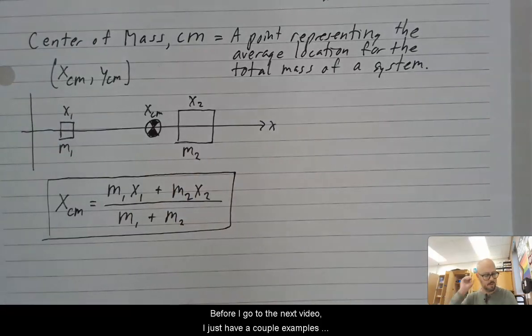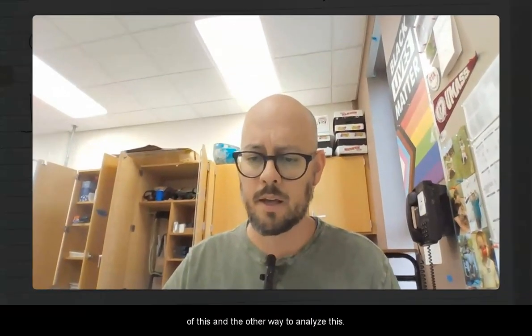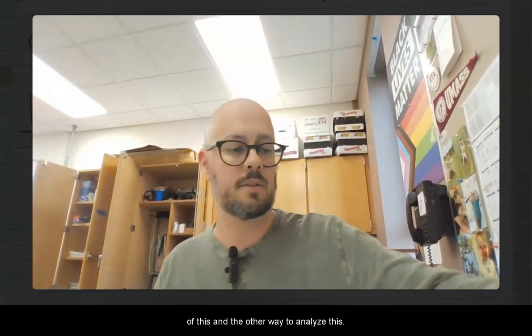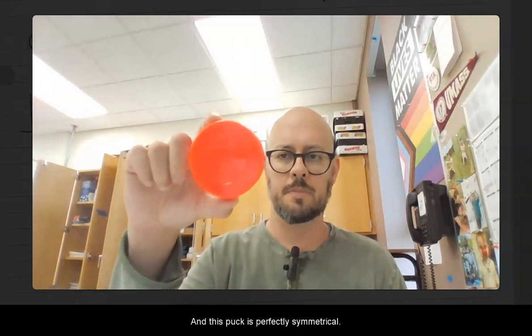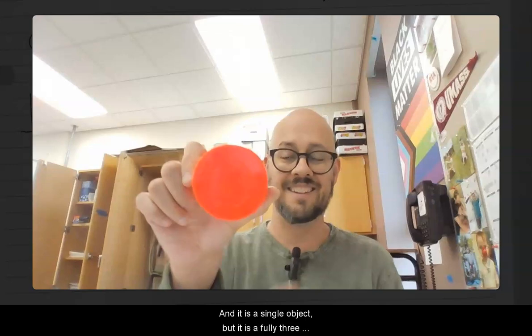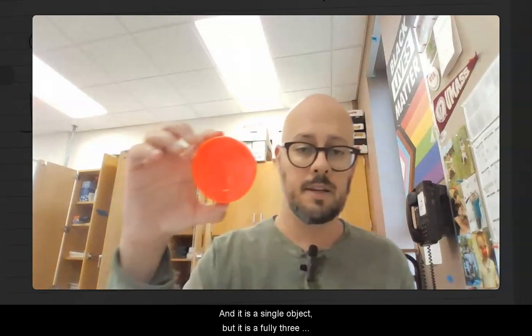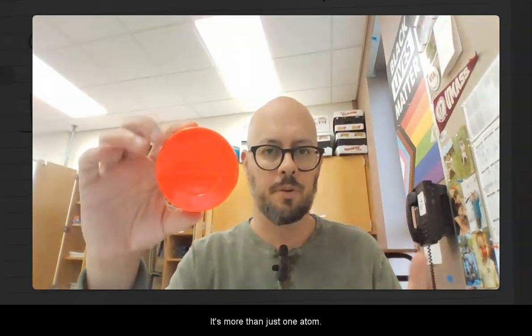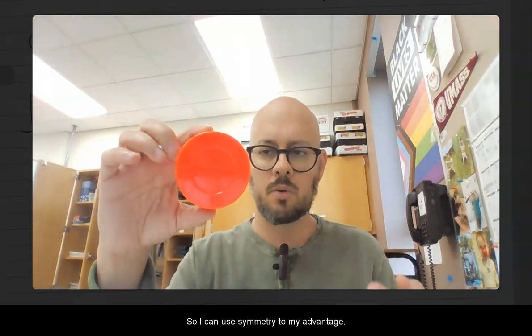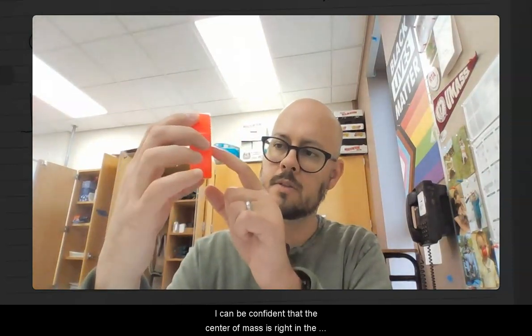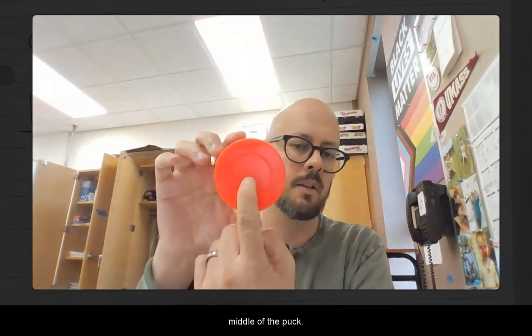Before I go to the next video, I just have a couple examples of this. And the other way to analyze this. So I have like a plastic street hockey puck here. And this puck is perfectly symmetrical, and it is a single object. But it is a fully three-dimensional object. It takes up a lot of space. It's more than just one atom. So I can use symmetry to my advantage. Because it's symmetrical in all directions, I can be confident that the center of mass is right in the middle of the puck.